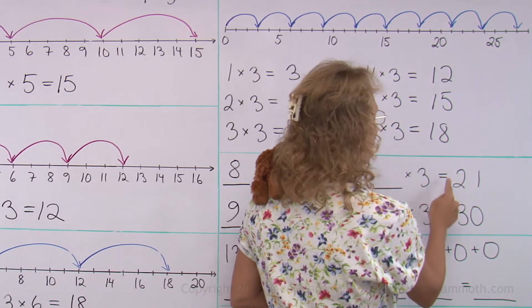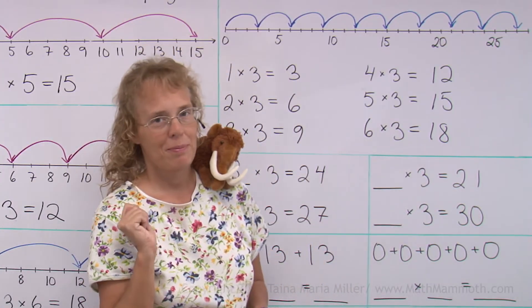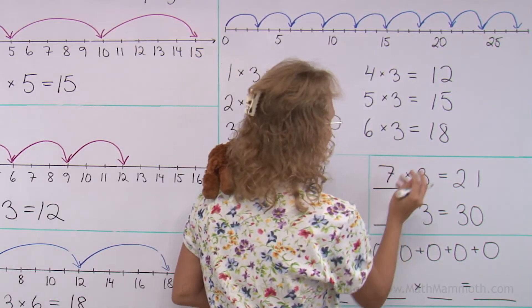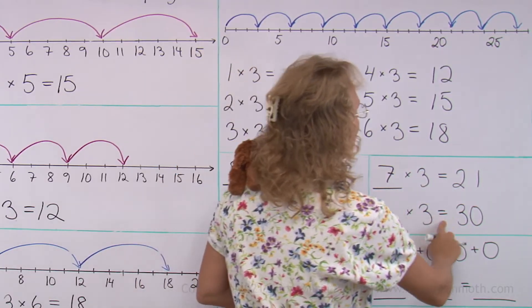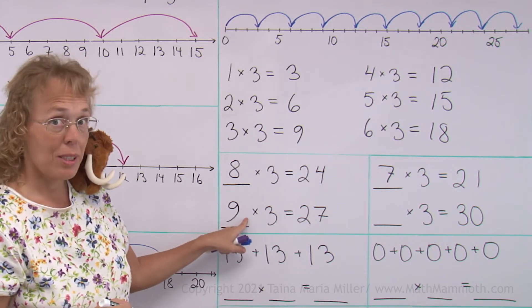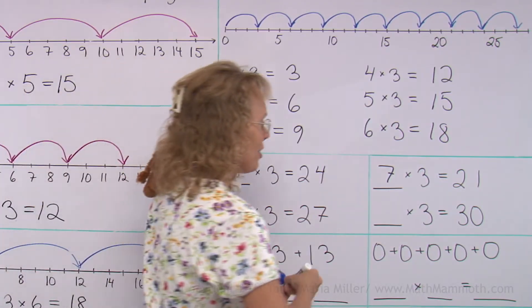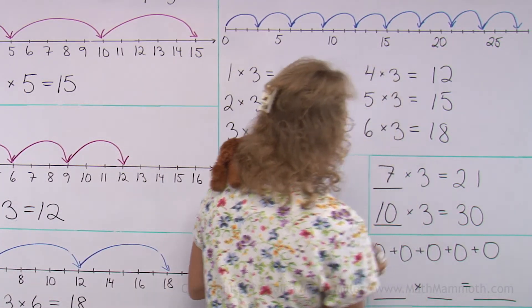How many jumps of three do you need to get to twenty-one? What do you think? Seven? Yep. How about how many jumps of three would take you to thirty? You can consider this one. One jump more from twenty-seven would take you to thirty, right? So ten goes here. Ten jumps.